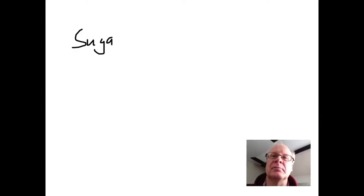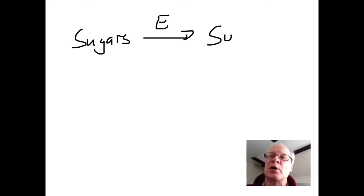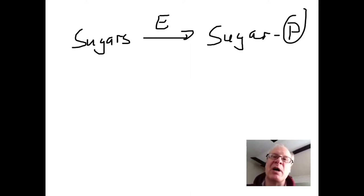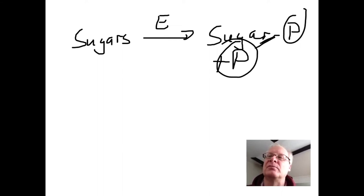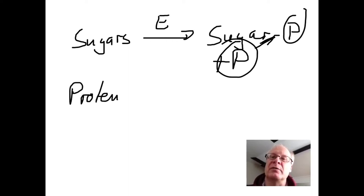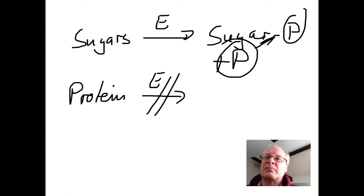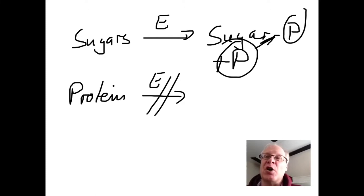Another enzyme, for example, takes sugars and adds a phosphate to these sugars, so we get a sugar phosphate — for example, glucose 6-phosphate. This enzyme can use different sugars but it always catalyzes the addition of this phosphate. If we offer the enzyme a protein, the enzyme would not add anything because it is not the right substrate. In this case, the enzyme is specific for sugars and it catalyzes a specific reaction, namely the addition of phosphate.